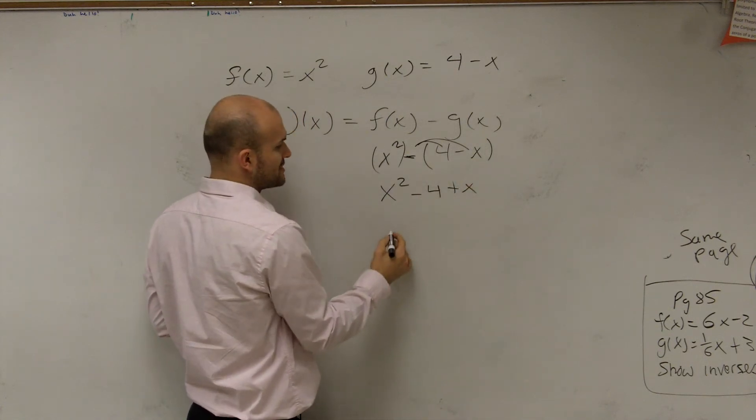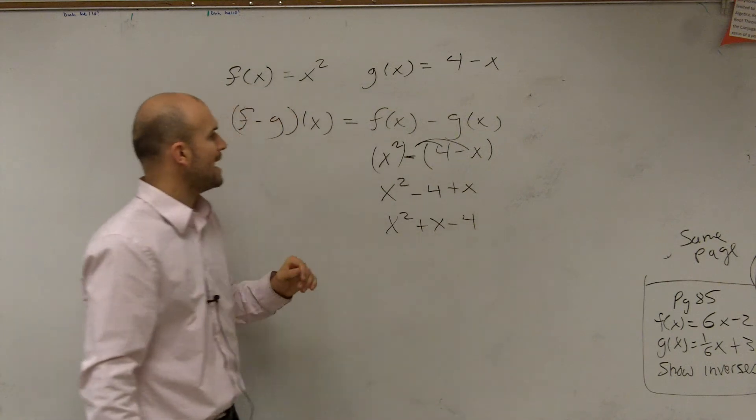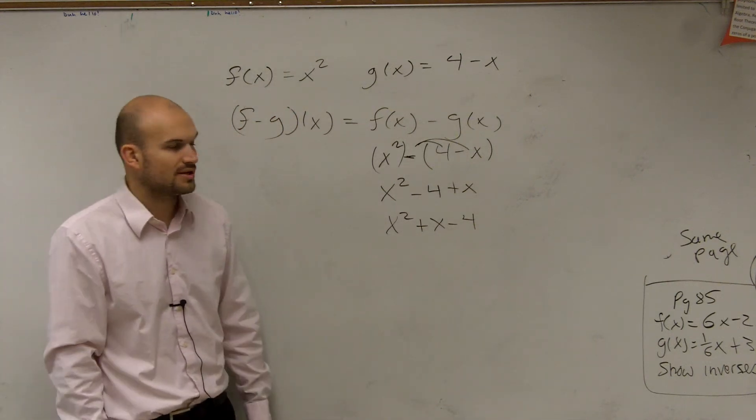Now I can rearrange them in standard form. And so f minus g is going to be x squared plus x minus 4.